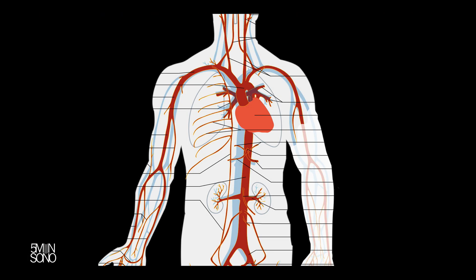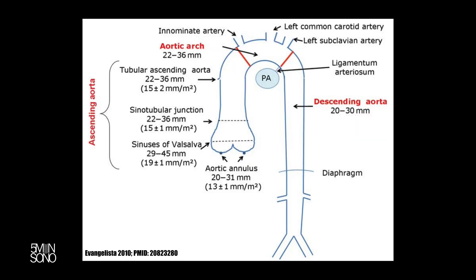The aorta — you can pretty much evaluate the entire thing. It's easy to see the root of the aorta and very easy to see the abdominal aorta. Occasionally you can get the arch and the descending aorta. They're a little bit harder to get, but they are possible.